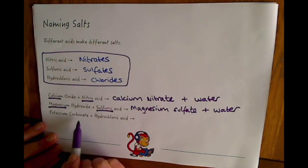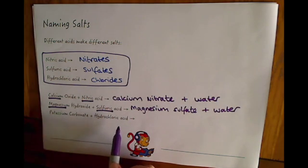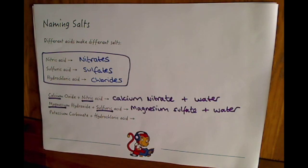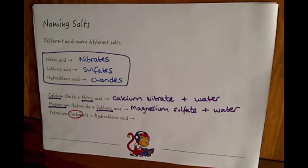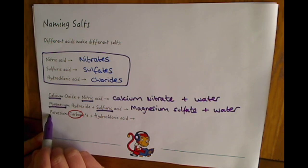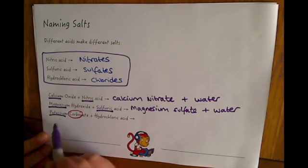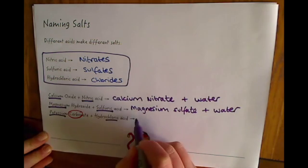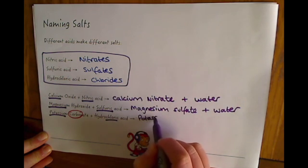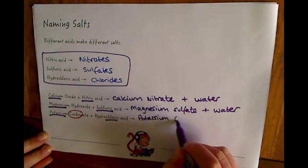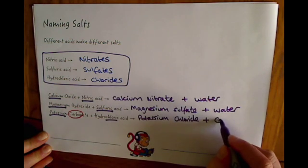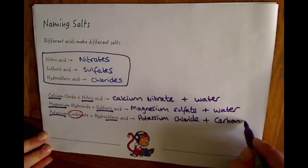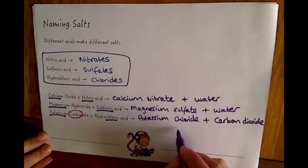And this one we see potassium carbonate plus hydrochloric acid. Alarm bells should be ringing. You should notice that this one has got that carbon in it. So we're going to make a salt plus carbon dioxide plus water. We've got potassium as the metal part plus hydrochloric acid, so we make potassium chloride plus carbon dioxide plus water.